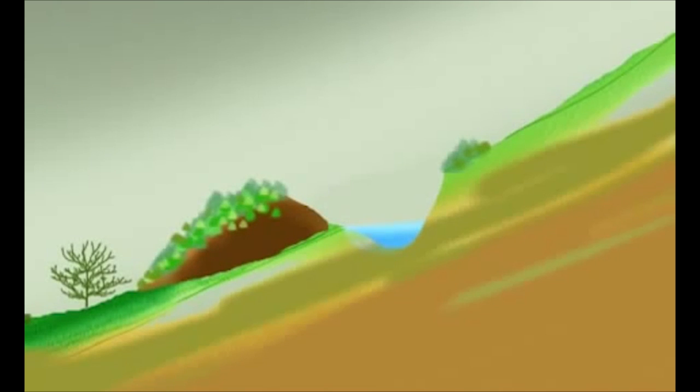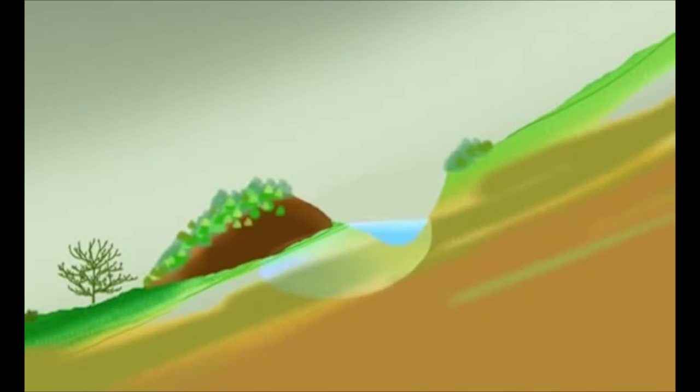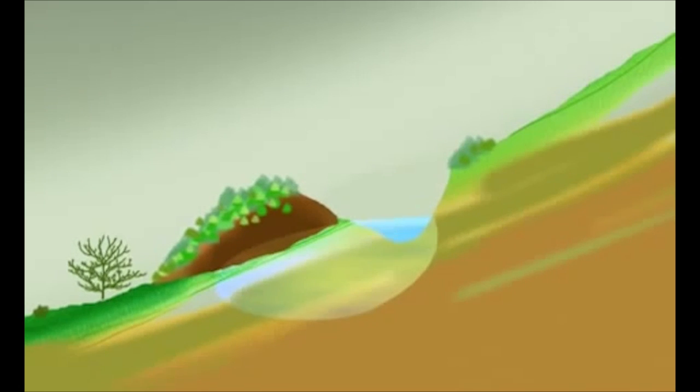It interrupts the water flow as it comes across the landscape and stops it on contour perfectly level. The soft mound on the lower side soaks the water into the landscape and it plumes through the landscape as a sponge, very slowly.